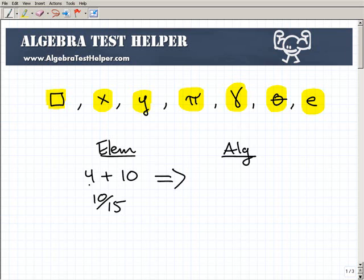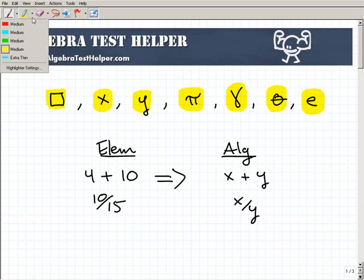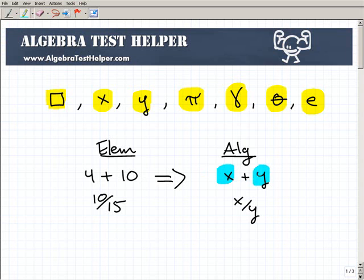And then as you make a transition into algebra, what we start doing is we basically are doing the same type of operations. But instead of numbers, we start to work with variables. So we might have like X plus Y or X over Y. But remember, these symbols or these letters still represent numbers.